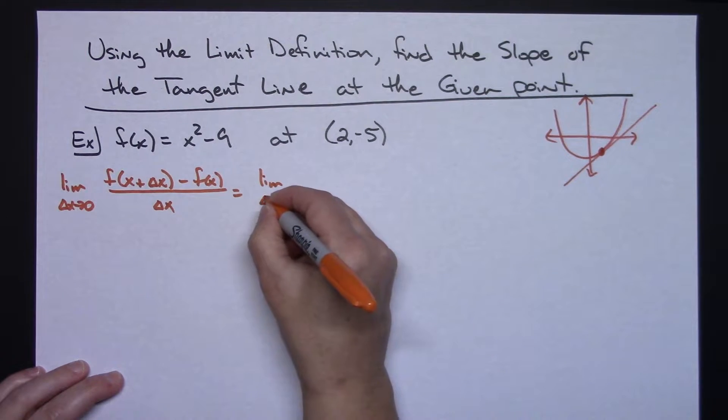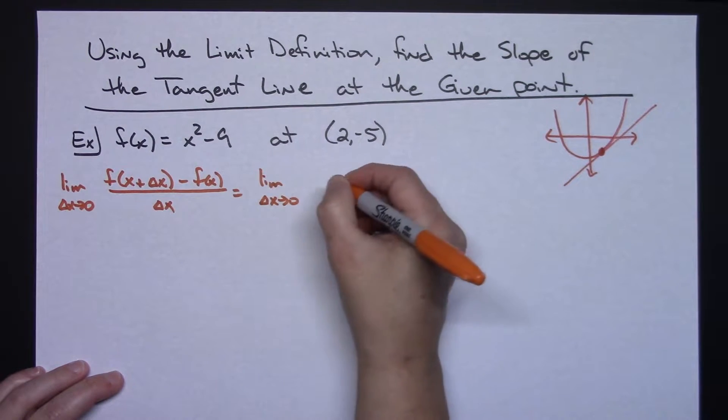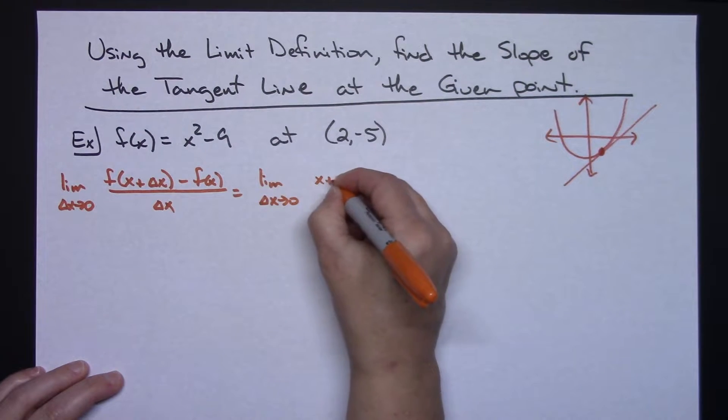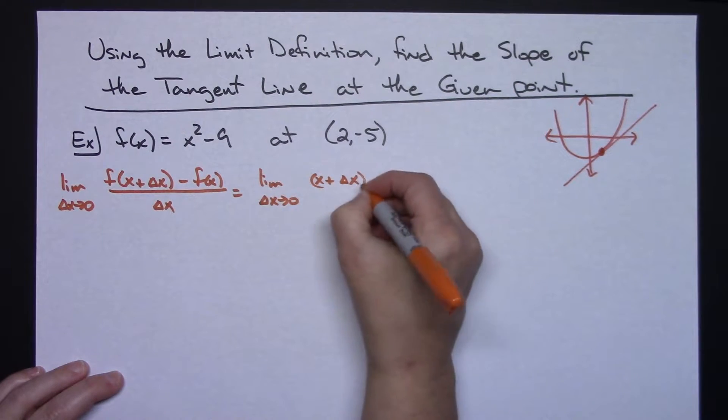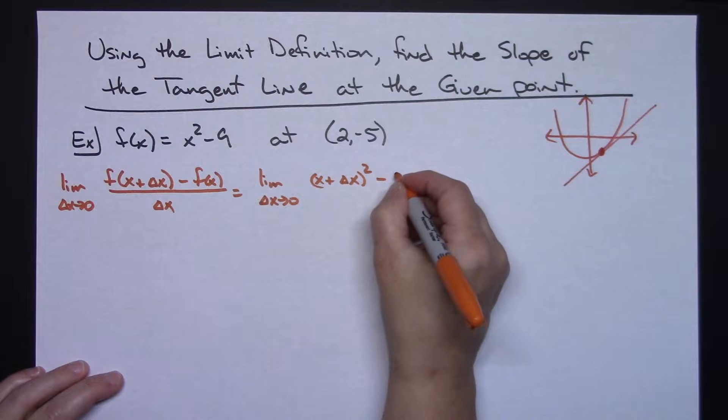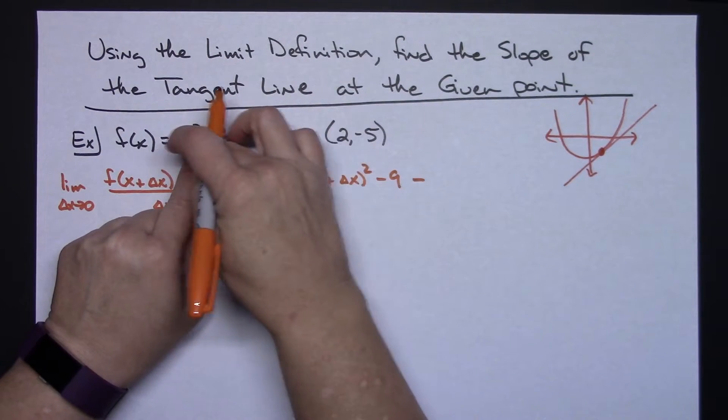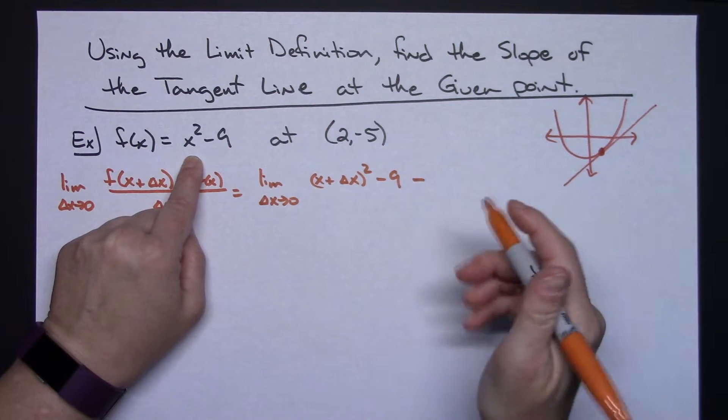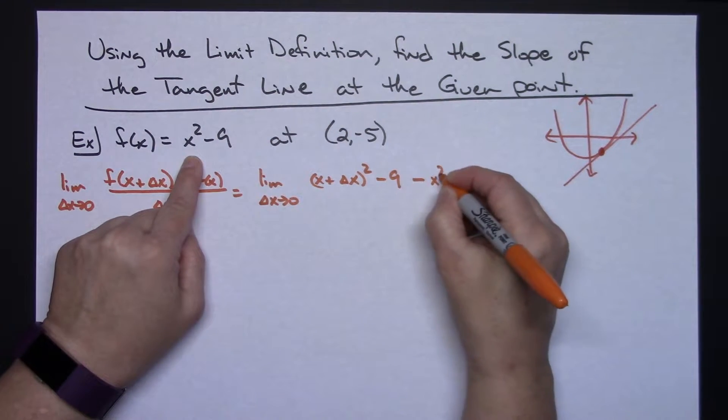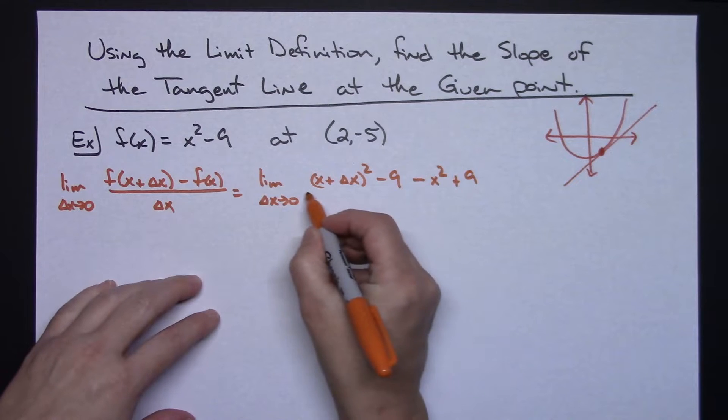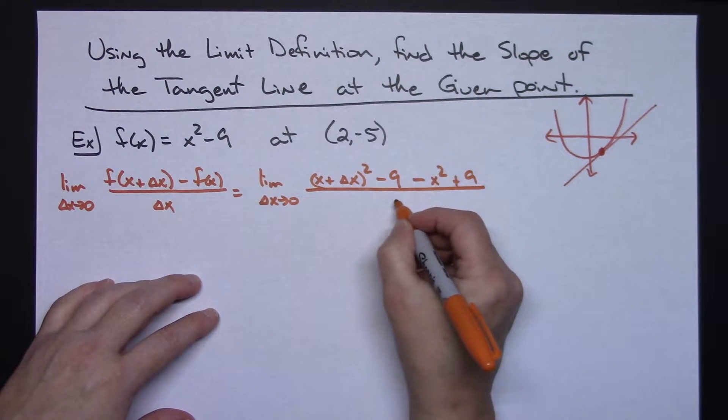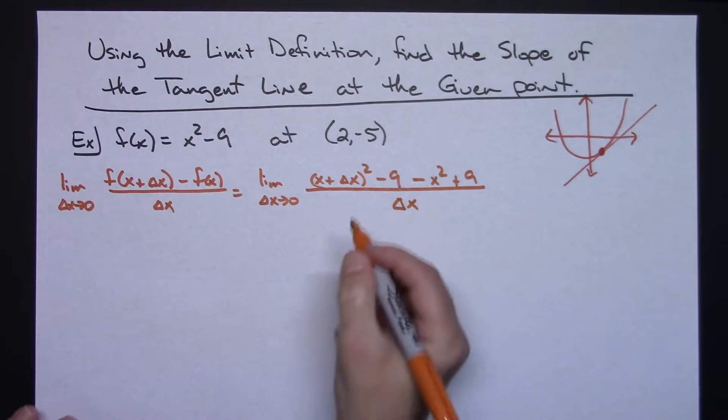To apply that to that function, the limit as Delta X approaches 0 of X plus Delta X quantity squared minus 9 minus the function itself. Since I'm going to minus a binomial, I got to go through and change all my signs, so minus X squared plus 9 all over Delta X.